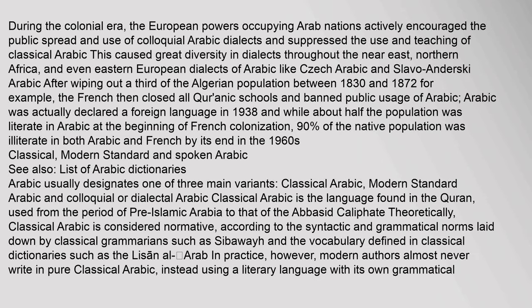During the colonial era, the European powers occupying Arab nations actively encouraged the public spread and use of colloquial Arabic dialects and suppressed the use and teaching of Classical Arabic. This caused great diversity in dialects throughout the Near East, Northern Africa, and even Eastern Europe. After wiping out a third of the Algerian population between 1830 and 1872, the French closed all Qur'anic schools and banned public usage of Arabic. Arabic was declared a foreign language in 1938, and while about half the population was literate in Arabic at the beginning of French colonization, 90% of the native population was illiterate in both Arabic and French by its end in the 1960s.